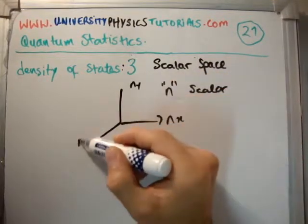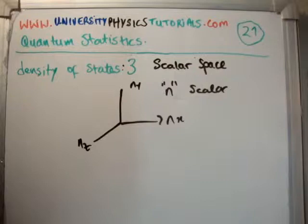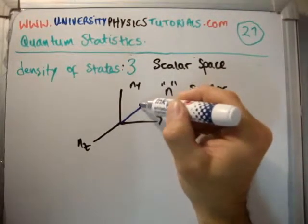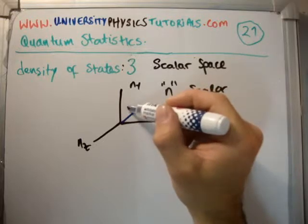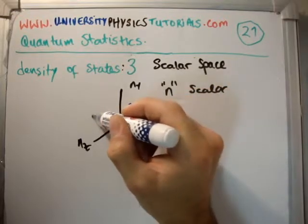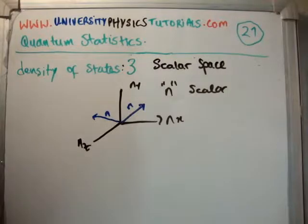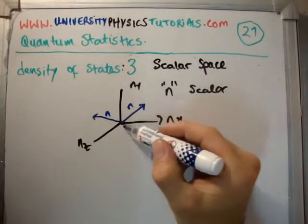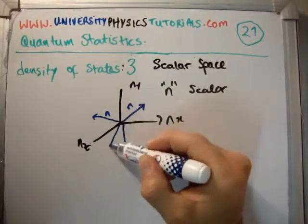So this is n scalar. Once again, n sub x, n sub y, n sub z. The question now I pose to you is, or it's not really a question. Say this is a certain value of n, and this one has the same magnitude. Well then, in scalar space, they are the same. They are one and the same. And so is this. And so is this.